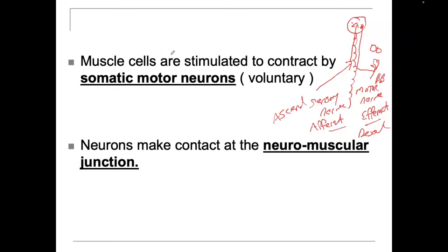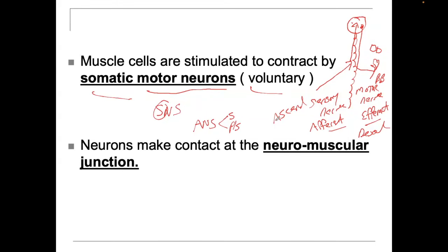Muscle cells are stimulated to contract by motor neurons — specifically, somatic motor neurons. You have the somatic neural system and the autonomic neural system. Autonomic is made up of the sympathetics and the parasympathetics, and these are automatic and involuntary — you have no conscious control over them. The somatic neural system is completely voluntary: moving your elbow, your foot, turning your head. So somatic motor neurons go to the muscles, and when they make contact, that exact place of contact is called the neuromuscular junction, the NMJ.